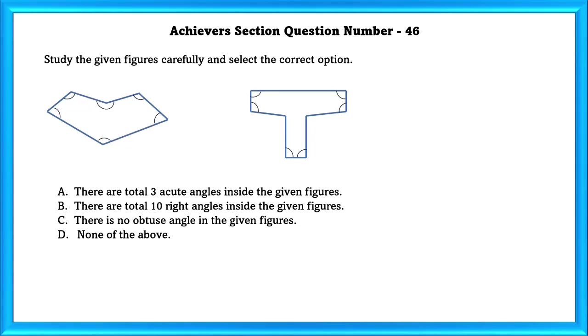Here we have two figures. The options are A: There are total 3 acute angles inside this figure. As we can see, there are only 2 acute angles in this figure. Therefore, this statement is wrong.